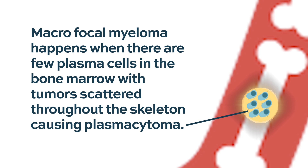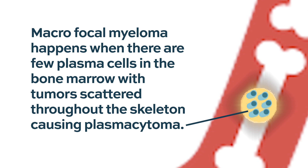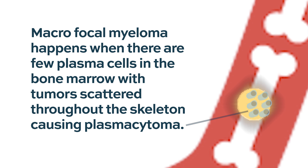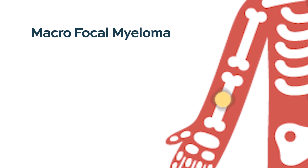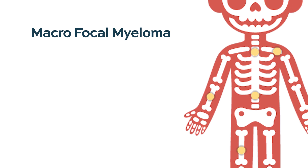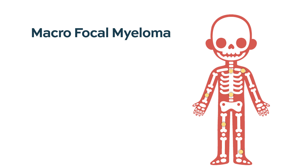If there is only one lesion, it's called solitary plasmacytoma, and that's a completely different entity. Multifocal plasmacytoma consists of scattered lesions or tumors throughout the skeleton made of plasma cells. They usually don't secrete a lot of protein, and they are quite difficult to diagnose. A patient usually presents with pain and fractures, and then you do a biopsy and find the plasma cells.